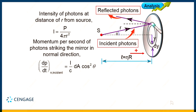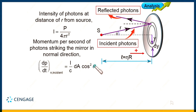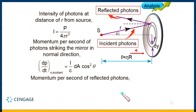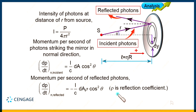Because this is a mirror, the radiation will reflect back, meaning it moves in the negative direction. The momentum per second reflected by the plate is dP/dt = −(I/c) · dA · cos²θ · ρ, where ρ is the reflection coefficient. If ρ equals 1, that means 100% of the radiation is reflected. If ρ equals 0, the radiation is absorbed by the plate. The negative sign indicates radiation is reflected back.